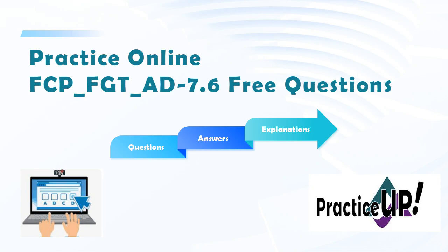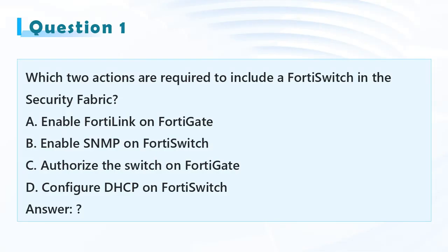Practice Online FCP_FGT_AD7.6 free questions from CERT-007. Question 1: Which two actions are required to include a 4D switch in the security fabric? A. Enable FortiLink on FortiGate, B. Enable SNMP on 4D switch, C. Authorize the switch on FortiGate, D. Configure DHCP on 4D switch.